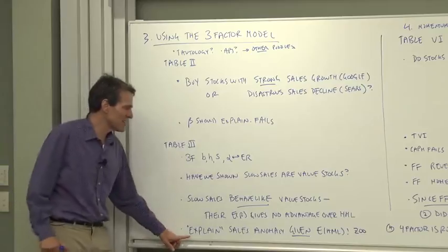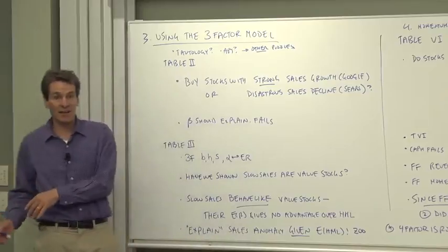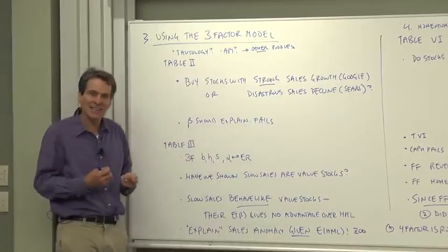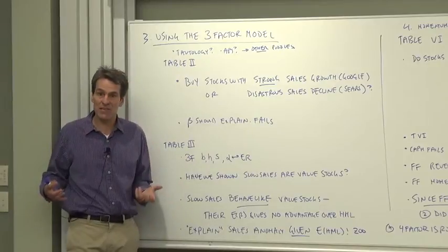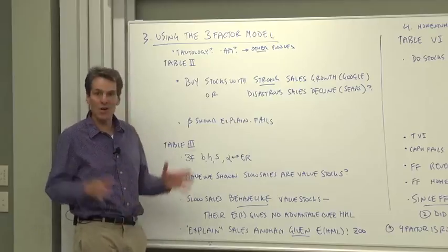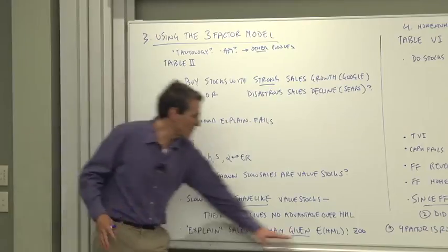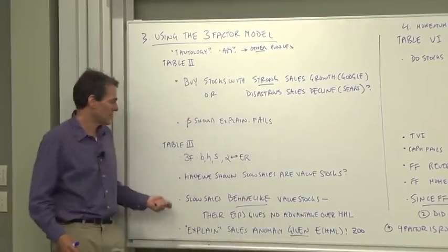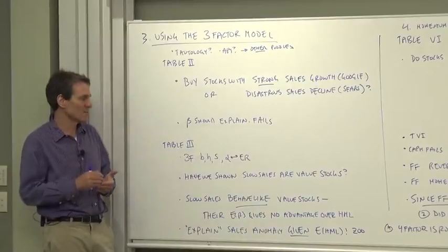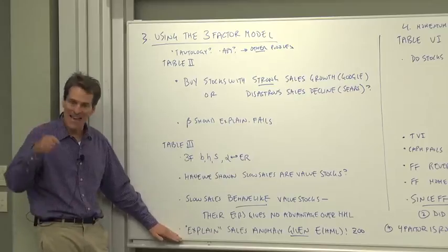Does that mean we've explained the sales growth puzzle? Well, we've explained the sales anomaly given the value premium. The value premium is over on the right-hand side. If the value premium doesn't make any economic sense, neither does the sales premium. But what we've learned is that this is not a new dimension of risk. This is another way of getting an old dimension of risk. The three-factor model puts order in the zoo of anomalies and says, look, this one, you may or may not have understood the value premium, but the sales growth anomaly is just another way of capturing the value premium, and so is not something new. It's not something worth paying a manager to do for you. It's explained to that extent by its beta.